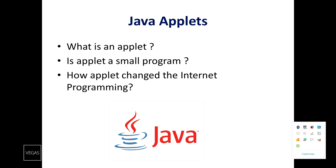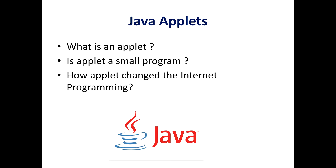The internet helped catapult Java to the forefront of programming, and Java in turn had a profound effect on the internet. In addition to simplifying web programming in general, Java innovated a new type of network program called the Applet that changed the way the online world thought about content. Java also addressed some of the thorniest issues associated with the internet — that is Portability and Security.